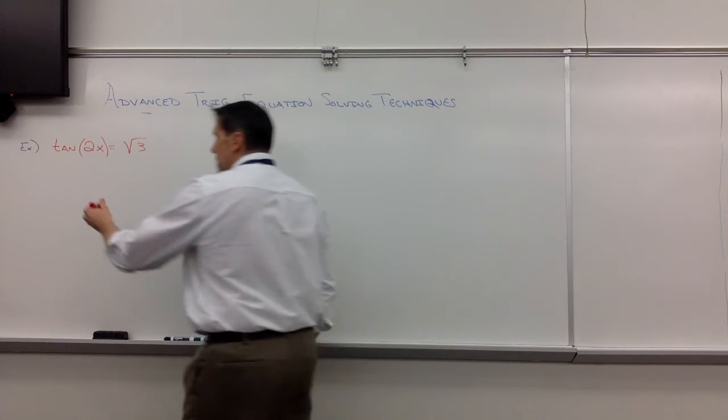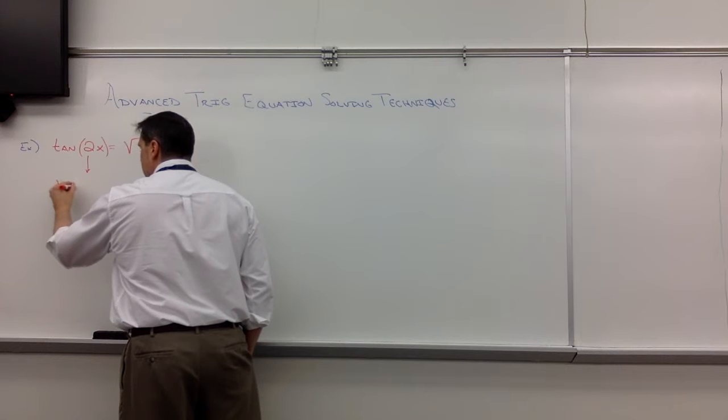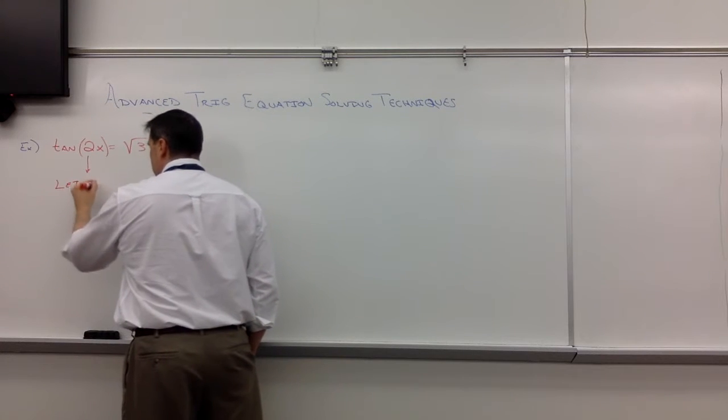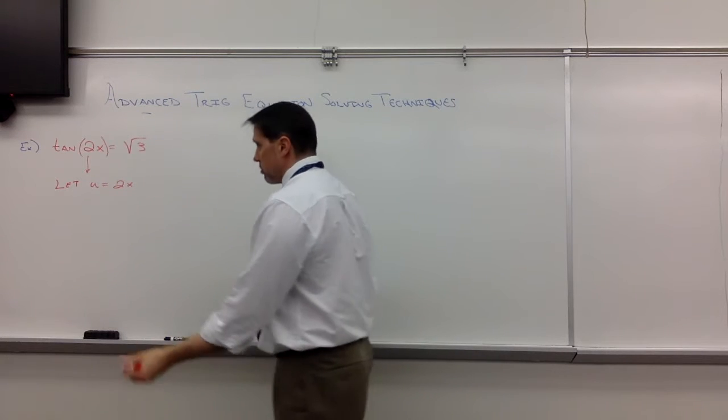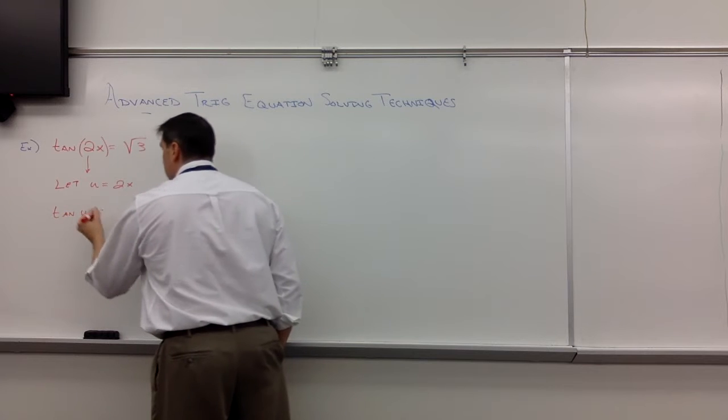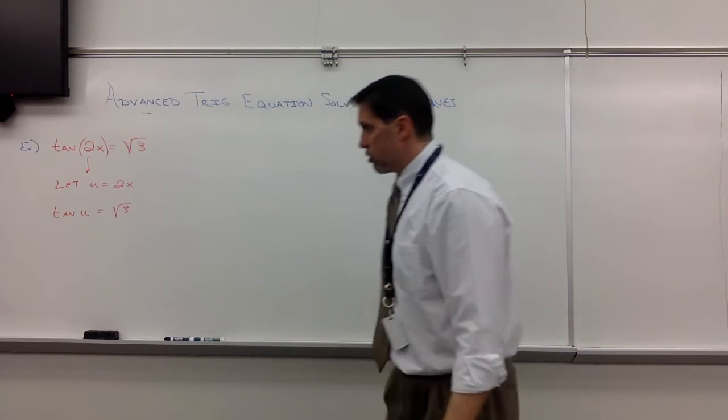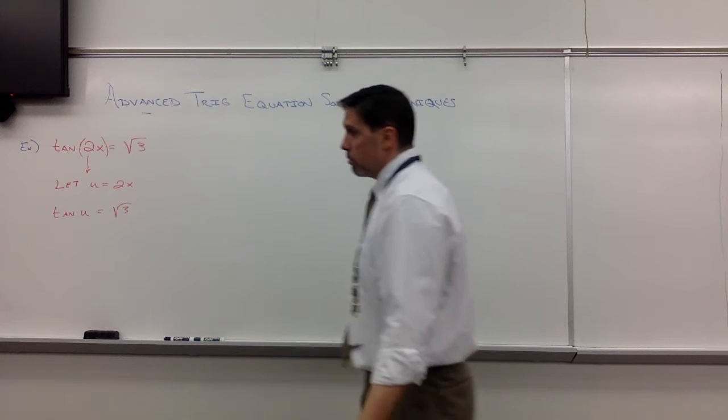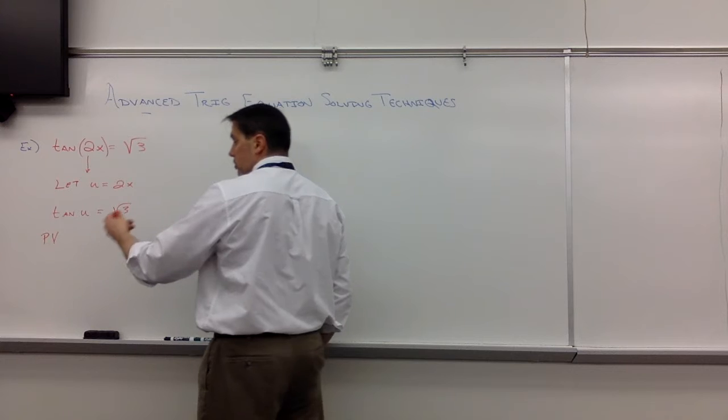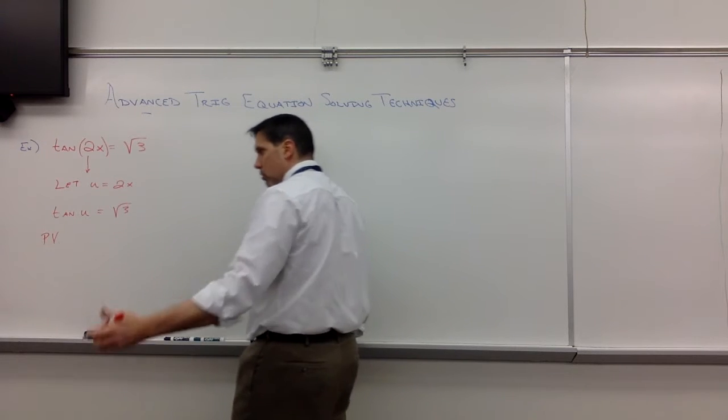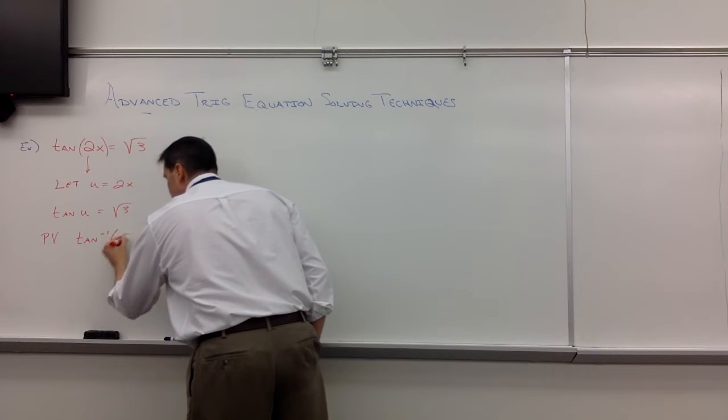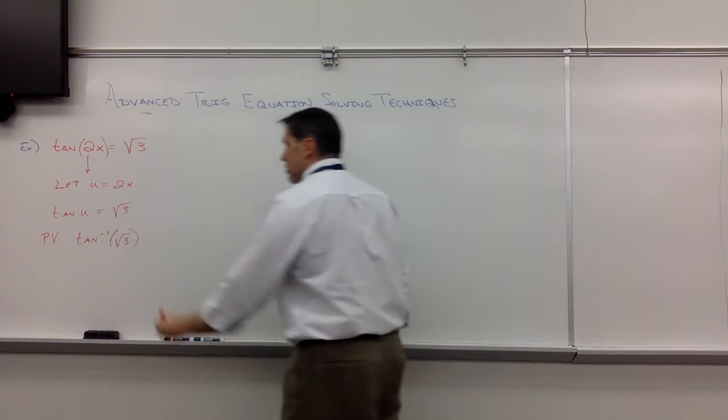Let's just say, like we did last time, let's let u equal 2x. And so we are solving tangent of u equals the square root of 3, at least initially. So tangent of u equals the square root of 3. Start with your principal value. That will help us from 0 to 360 and then ultimately 0 to 2π. So what is the tan inverse of the square root of 3? That is 60 degrees.